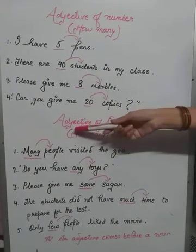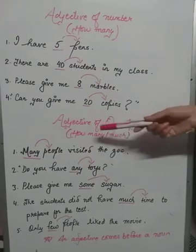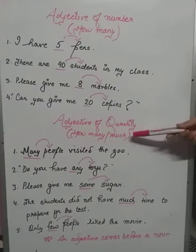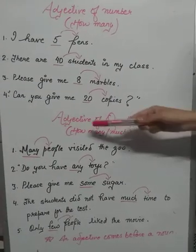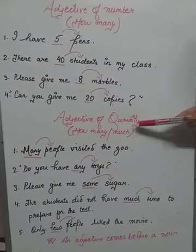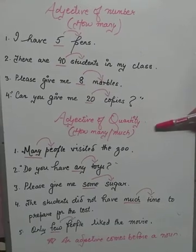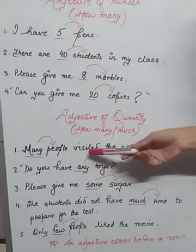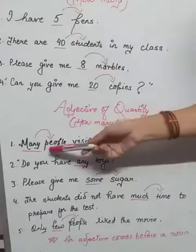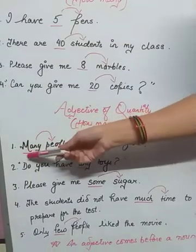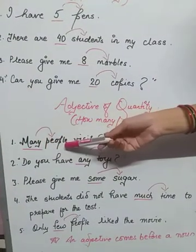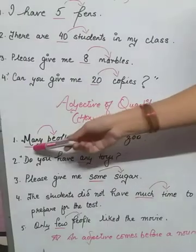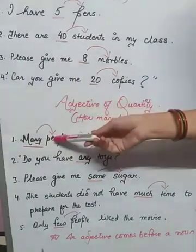Now let us go to adjective of quantity. It shows you how many nouns and how much nouns. Here you will have both countable nouns and uncountable nouns. Many people visited the zoo. People is the noun. How many people? Many people. You can count the people, but if there are too many you don't count. So many is telling you the quantity of people. This is adjective of quantity.